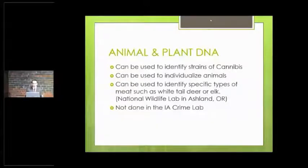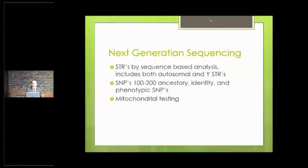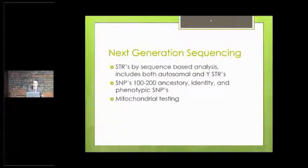Animal and plant DNA — I talked about the dog issue. National wildlife agencies can do work on identifying rhinoceros horns, different elk versus deer — they can do the same thing that we're doing for humans, but with animals. Next-generation sequencing is kind of all these different things combined.